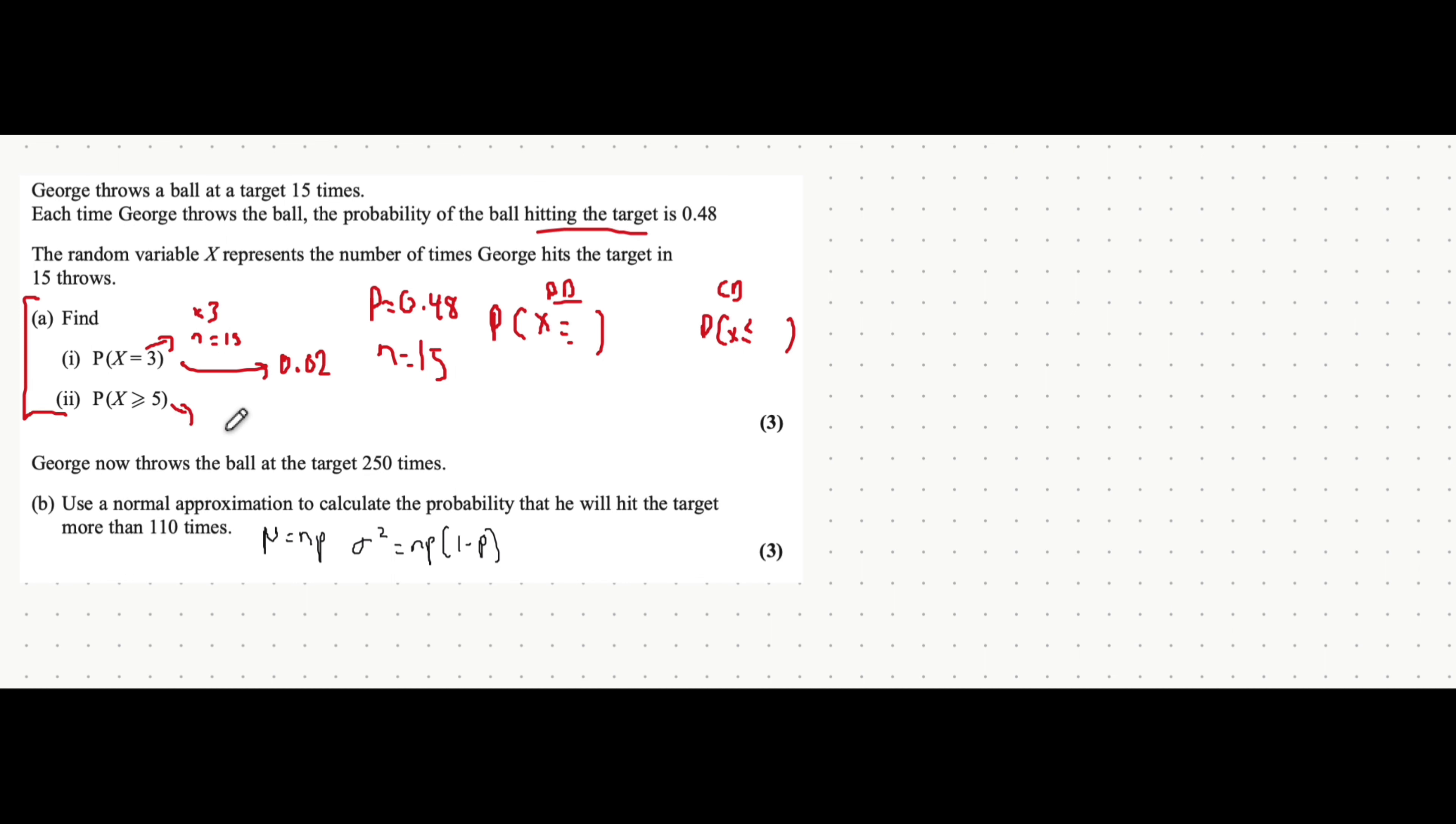Now, X is bigger than or equal to 5. Now, this is a bit more difficult because that doesn't fall into the category of CD or PD. And it doesn't make sense to use PD because then you'd have to find equal to 5, equal to 6, equal to 7, all the way up to 15.